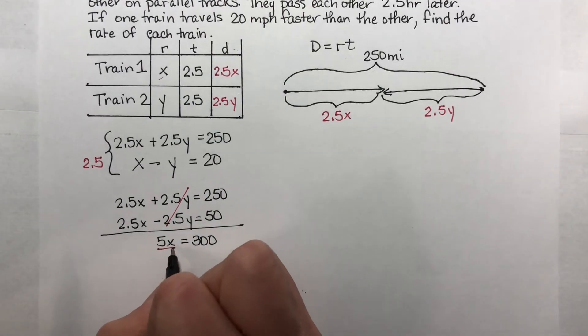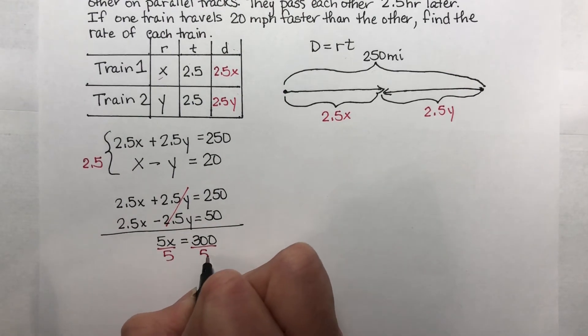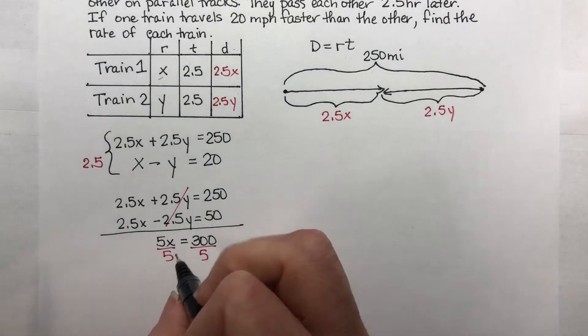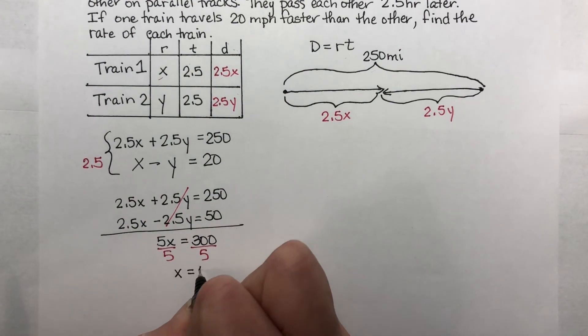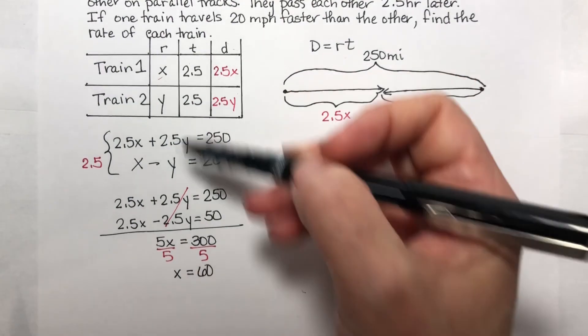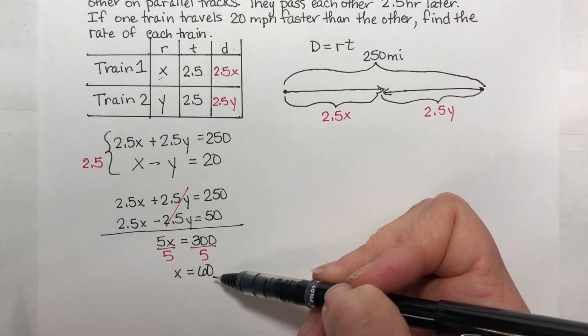I get 5x is equal to 300. Now divide both sides by 5. And I get that x is equal to 60. So train one is going 60 miles per hour.